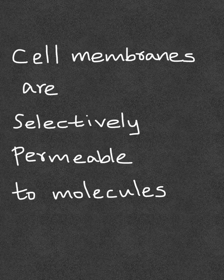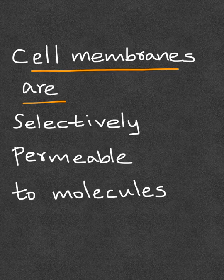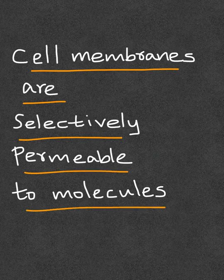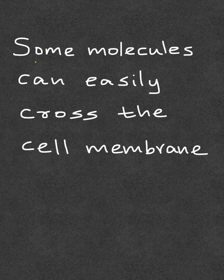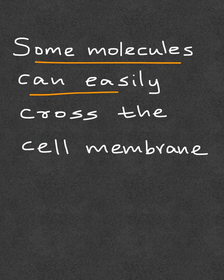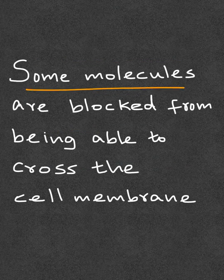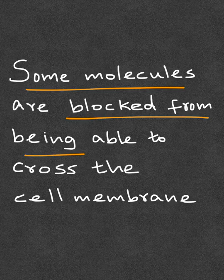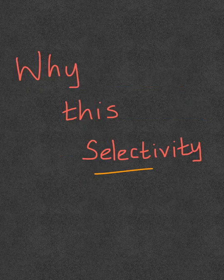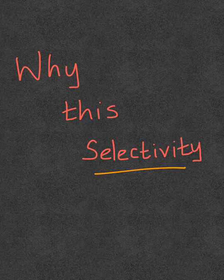Selective permeability, in simple terms, means that cell membranes are selectively permeable to molecules. That is, some molecules can easily cross the cell membrane whereas some other molecules are blocked from crossing. The reason for this selectivity can be understood by looking at the structure of the cell membrane.